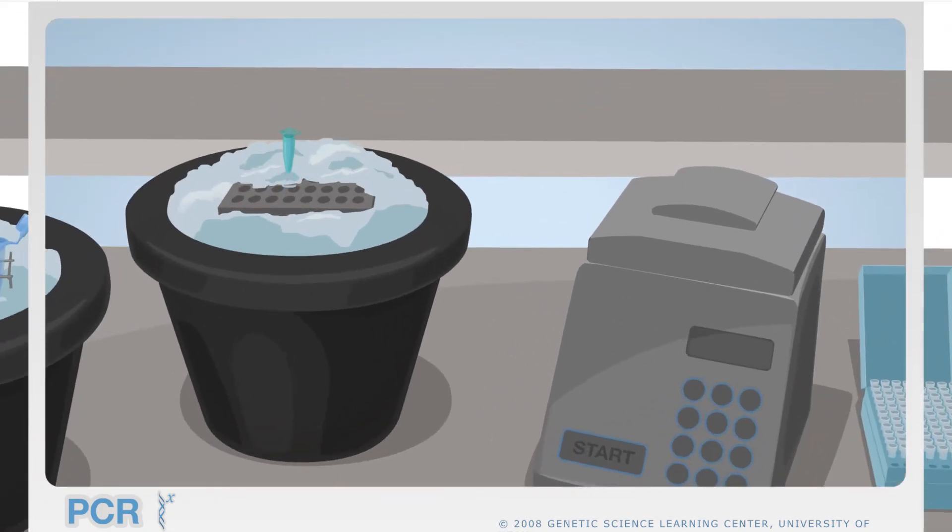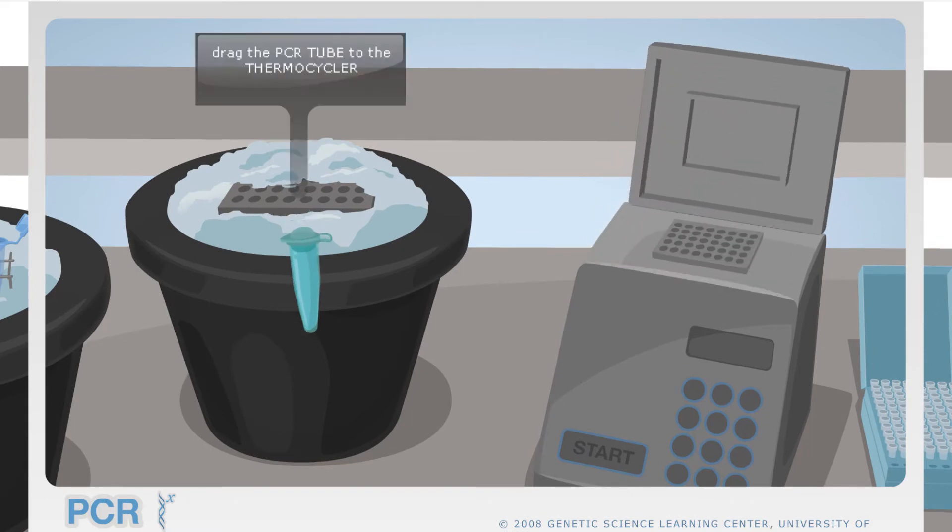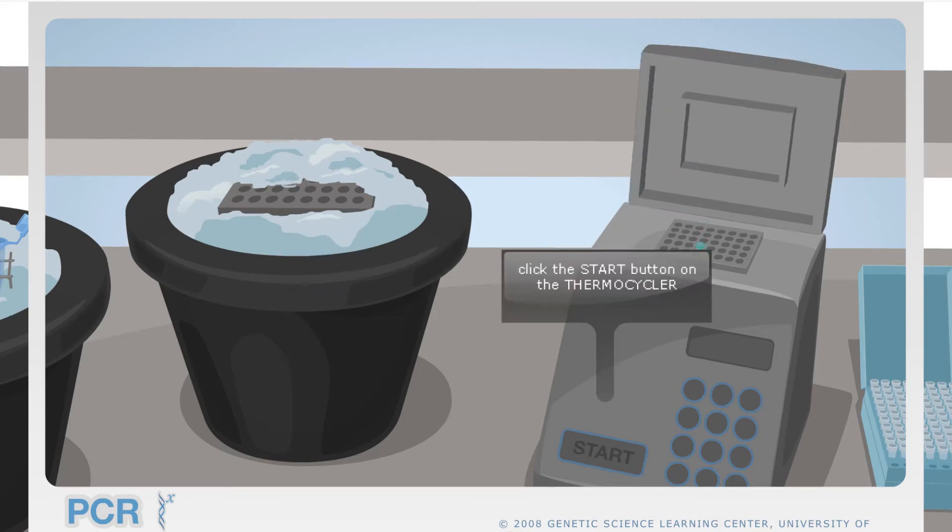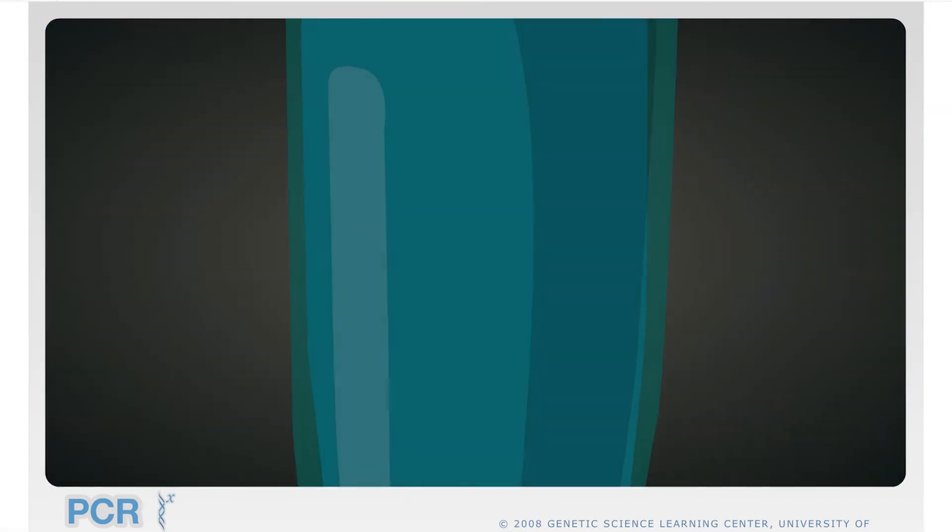Alright, now everything is in the tube. Let's now put this into the PCR machine that will heat and cool it in several cycles. Each cycle doubles the target DNA sequence in the sample. Let's look at how this is done.